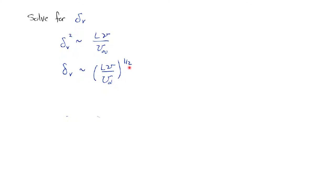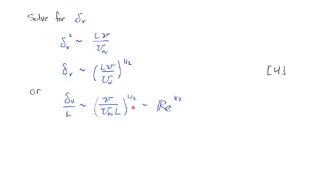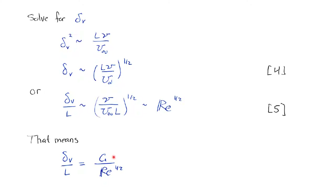Putting it in dimensionless form, fluid mechanicians love: δᵥ/L ~ (ν/(u∞L))^(1/2), which is one over Re^(1/2). We now know how boundary layer thickness scales with Reynolds number. This won't give you an accurate number, but it'll get the right order of magnitude. If you want an actual number, δᵥ/L = C / Re^(1/2), where the constant C must be found by solving the equations exactly, making assumptions, or running experiments. That's equation 5 in dimensionless form.